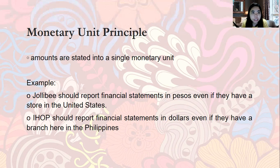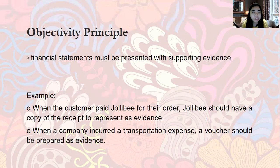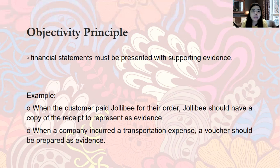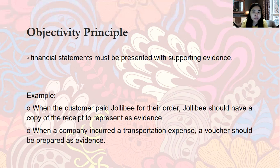Next is the Objectivity Principle. Financial statements must be presented with supporting documents. When we speak of objectivity, we do not just report based on guesses or assumptions — we report all accounts and operations with supporting documents. For example, when a customer pays Jollibee for their order, Jollibee should have a copy of the receipt to serve as evidence.